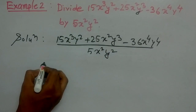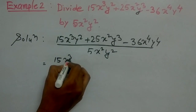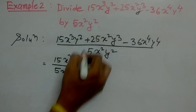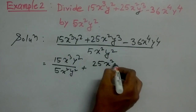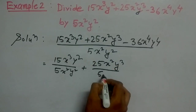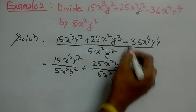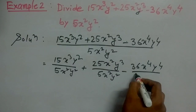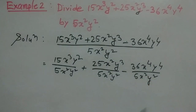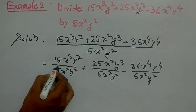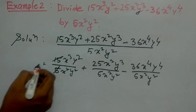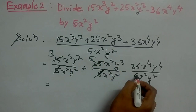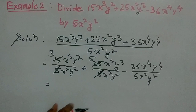So we will split it as 5x cubed y squared divided by 5x squared y squared, plus 25x squared y cubed divided by 5x squared y squared, minus 36x to the power 4 y to the power 4 divided by 5x squared y squared. Now the coefficients will be divided: 15 by 5 is 3, this is 5, and 36 cannot be divided by 5 so let it be as it is.